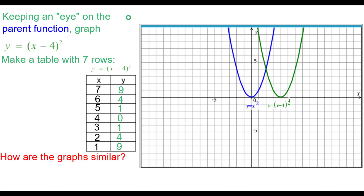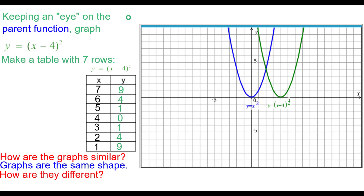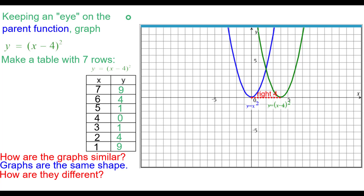So how are the graphs similar? Well, they are the same shape. But how are they different? You can see that the vertex is shifted right 4 from blue to green. These points also shift right 4 and right 4.